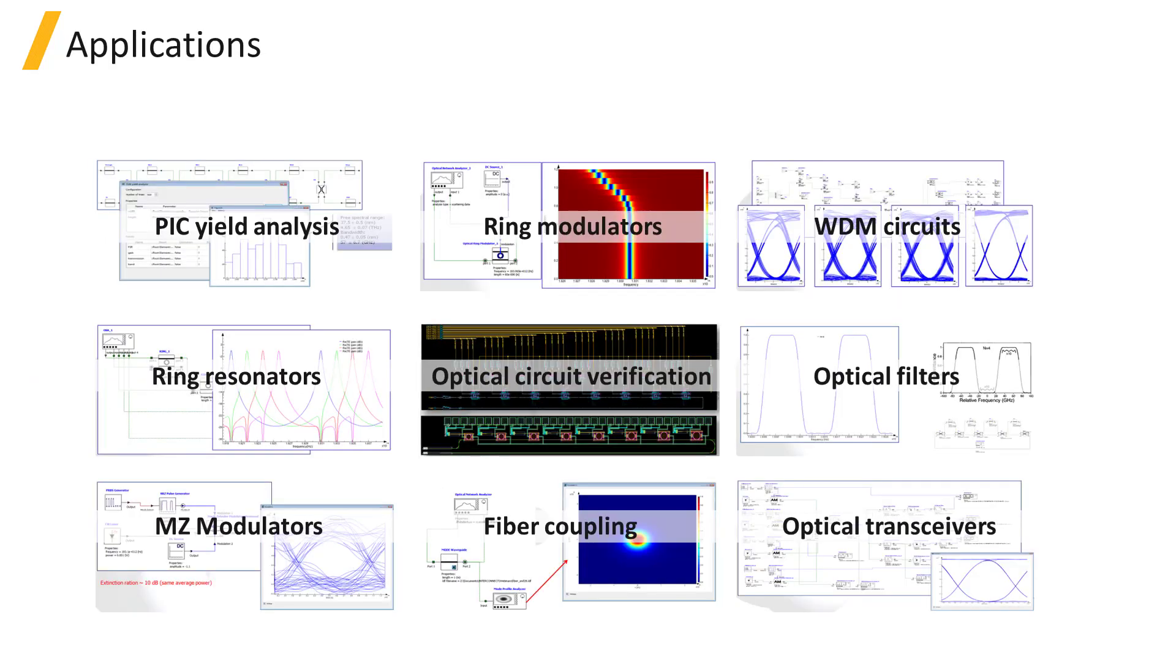As we've already discussed, InterConnect can be used for frequency and time domain simulations of optical circuits, components, and interconnects. A few common application areas include photonic integrated circuit yield analysis, ring resonators, Mach-Zehnder modulators, ring modulators, optical circuit verification, fiber coupling, waveguide division multiplexing circuits, optical filters, and optical transceivers.